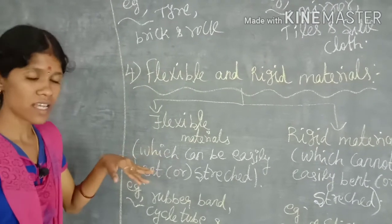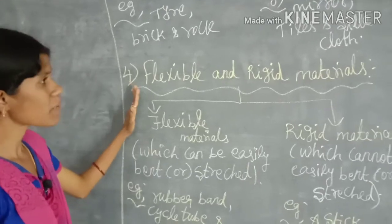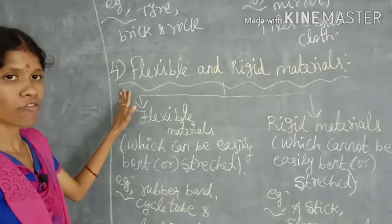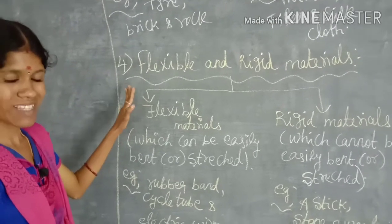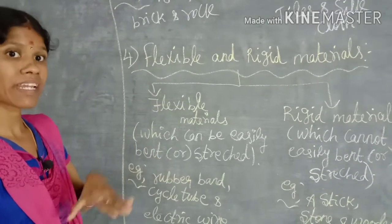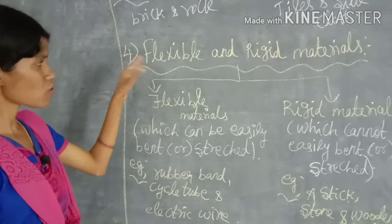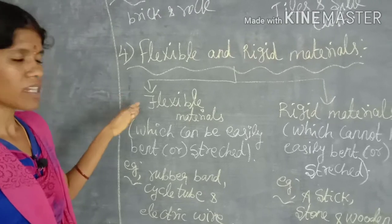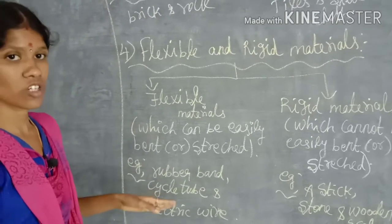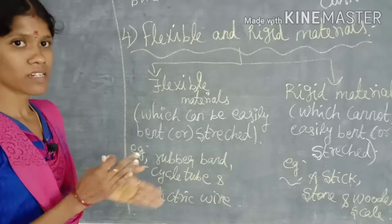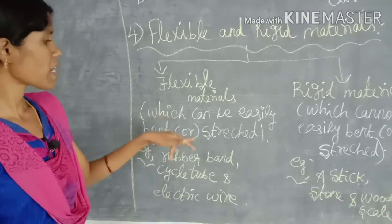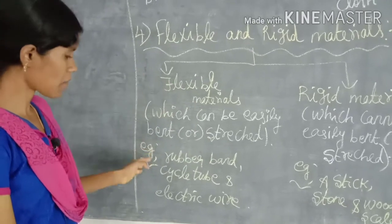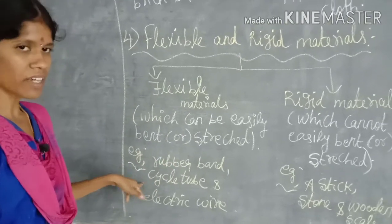The next property is flexible and rigid material. Flexible means it can be easily bent. The material which can be easily bent or stretched belongs to the flexible material. For example, rubber band, cycle tube, and electric wire — these can all be easily bent or stretched.